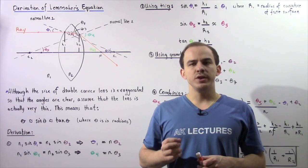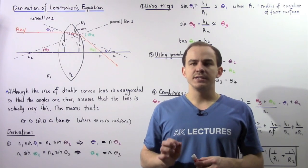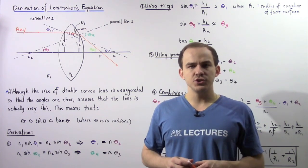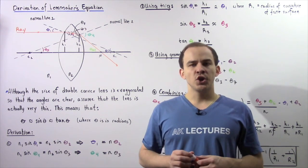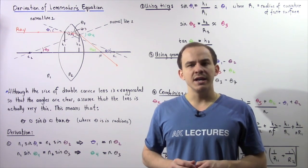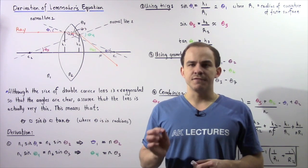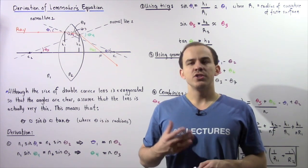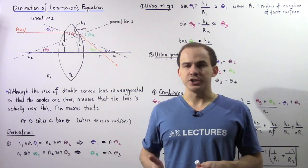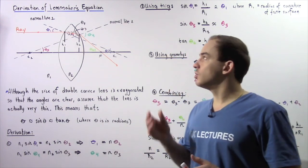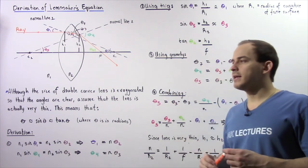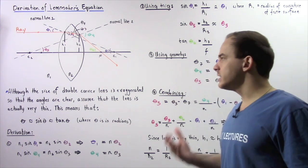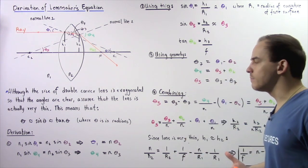In the previous lecture we defined the Lensmaker's Equation and we said we can use it to determine the focal length of our lens, knowing the index of refraction of that lens as well as the radii of curvature. Now let's actually derive the Lensmaker's Equation using geometry, trigonometry, and Snell's Law.